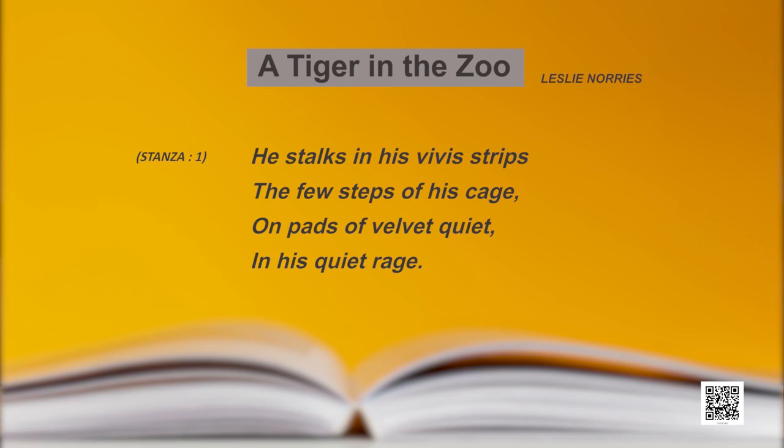The first stanza: 'He stalks in his vivid stripes, a few steps of his cage, on paths of velvet quiet, in his quiet rage.' Where is he now? He is in the zoo, in the cage. He is taking a few steps — the word the poet uses is 'stalks.' Then there are paths of velvet quiet. Please write: few steps, stalks, velvet quiet.